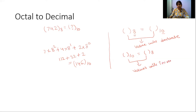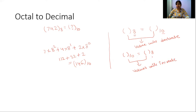When converting from lower base to higher base, the value decreases. Conversely, converting from higher base to lower base increases the value. This can be a useful shortcut when solving MCQs — if you know the direction of conversion, you can eliminate options that go the wrong way and save time.